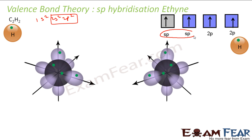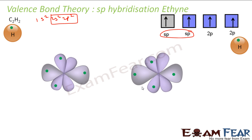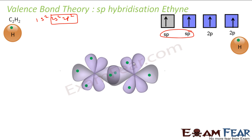After one electron moves, sp hybridization occurs. Each carbon now has 2 sp hybrid orbitals and two remaining 2p orbitals. So for each carbon: sp, sp, 2p, and 2p. Each sp orbital has one unpaired electron, and each 2p orbital also has one unpaired electron.